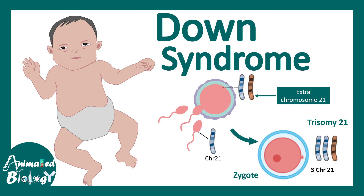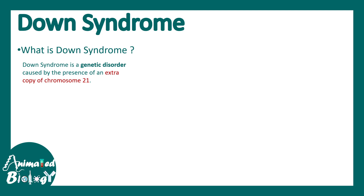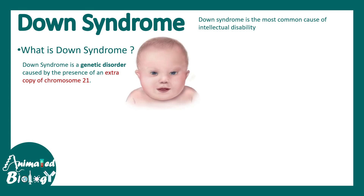In this video we'll be talking about Down syndrome. Down syndrome is a genetic disorder that is caused by the presence of an extra copy of chromosome 21, and it's the most common intellectual disability.